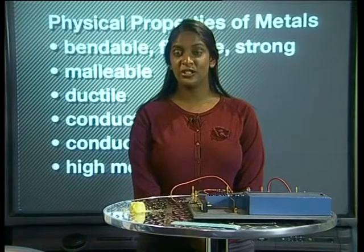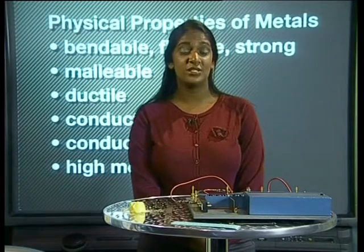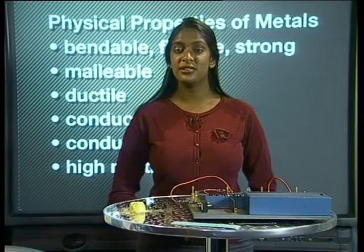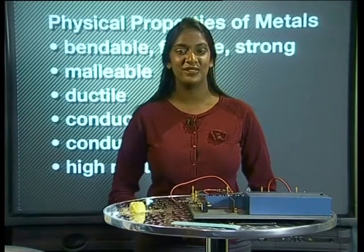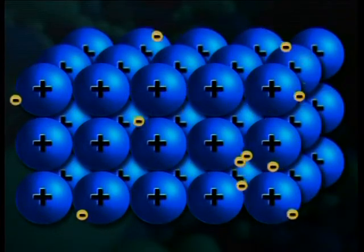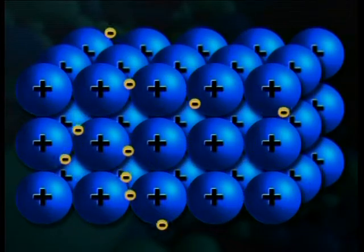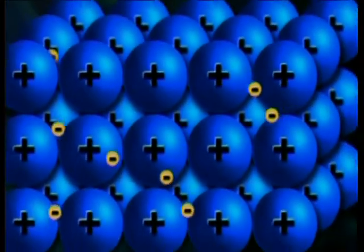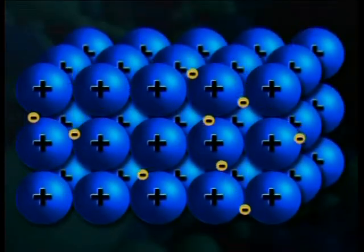This microscopic model of metals can help us explain the physical properties we have discovered. Notice the particles are not held in a fixed, regular structure. The forces of attraction between the particles are strong, but act in more than one direction. When a force is applied to the metal, the shape of the lattice may change, but the forces of attraction still keep the particles together. So the model can be used to explain why metals are flexible, malleable, and ductile. The fact that there are lots of strong forces holding the lattice together means that a lot of energy would have to be applied to break it up — this explains why metals generally have high melting points.